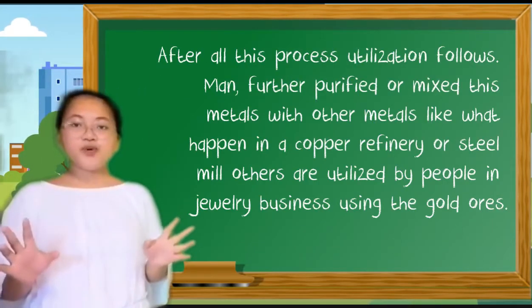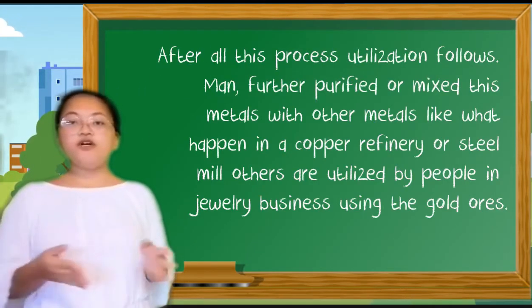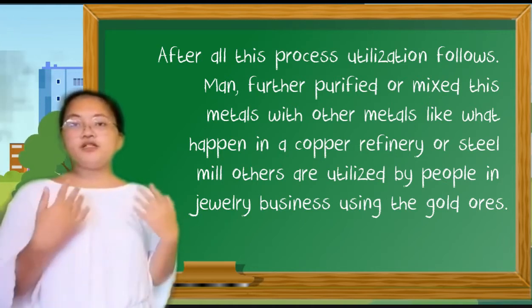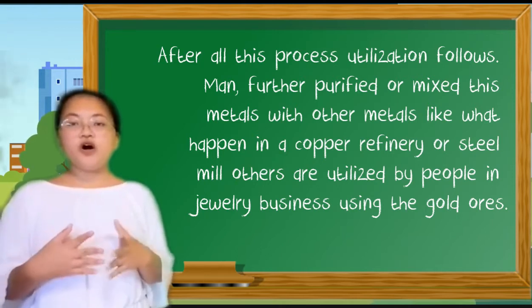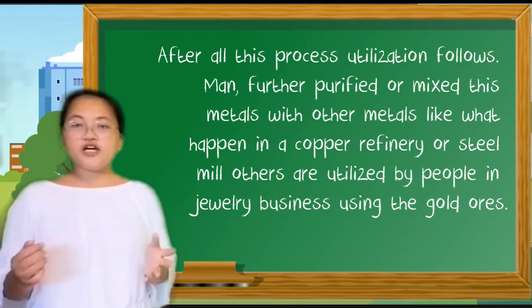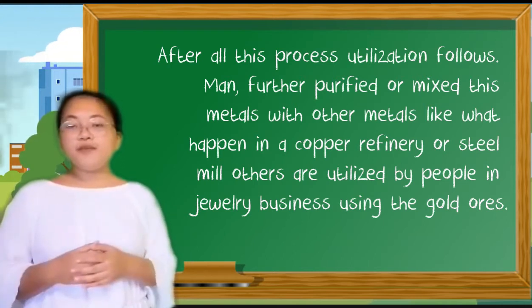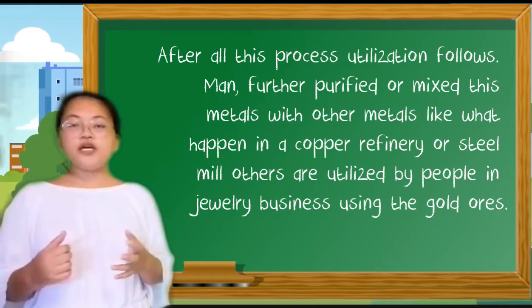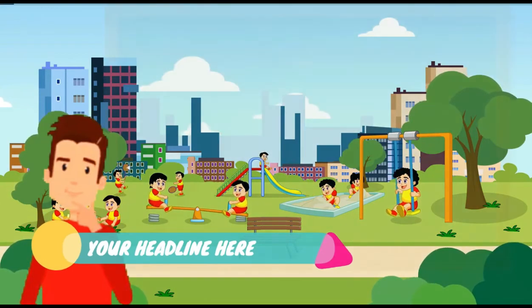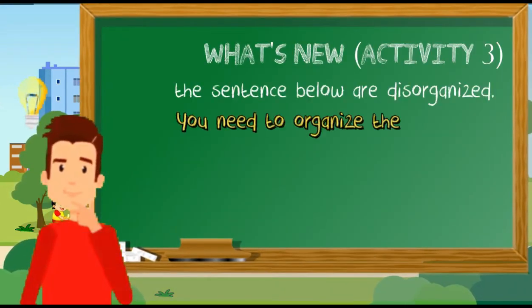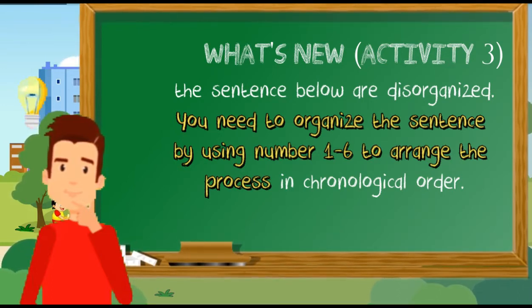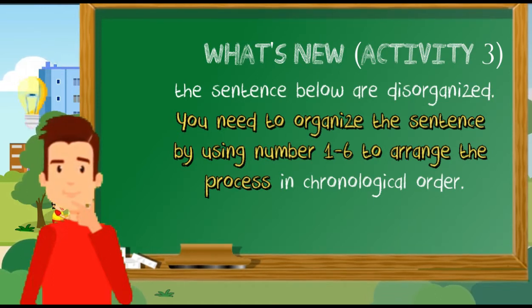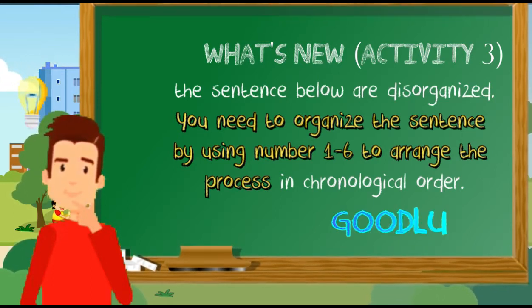After all this process, utilization follows. Further purify or mix these metals with other metals like what happens in a copper refinery or steel mill. Others are utilized by the people in jewelry business using the gold ores. And for your next task, What's New Activity 3, the sentences below are disorganized. You need to organize the sentences by using 1 to 6 to arrange the process in chronological order. Good luck learners!